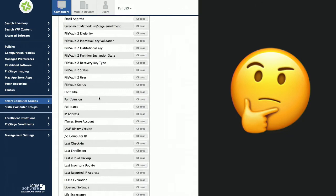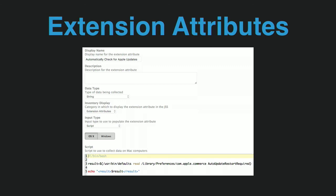Extension attributes are your friend here. Extension attributes are how you extend the inventory capabilities of Jamf Pro — if it's something that inventory is not collecting by default and you want to know about it, this is how you do it. There are a few different ways, but for automation you can write scripts that will report on things you want to know about.